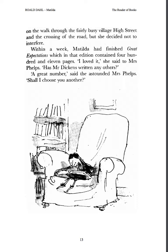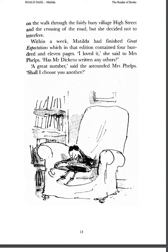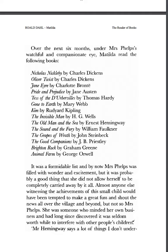'I loved it,' she said to Mrs. Phelps. 'Has Mr. Dickens written any others?' 'A great number,' said the astounded Mrs. Phelps. 'Shall I choose you another?' Over the next six months, under Mrs. Phelps' watchful and compassionate eye, Matilda read the following books: Nicholas Nickleby by Charles Dickens. Oliver Twist by Charles Dickens. Jane Eyre by Charlotte Brontë. Pride and Prejudice by Jane Austen. Tess of the D'Urbervilles by Thomas Hardy. Gone to Earth by Mary Webb. Kim by Rudyard Kipling. The Invisible Man by H.G. Wells. The Old Man and the Sea by Ernest Hemingway. The Sound and the Fury by William Faulkner. The Grapes of Wrath by John Steinbeck. The Good Companions by J.B. Priestley. Brighton Rock by Graham Greene. Animal Farm by George Orwell.